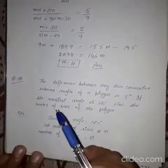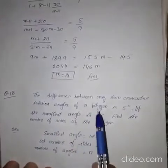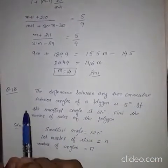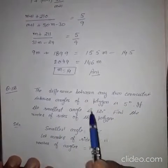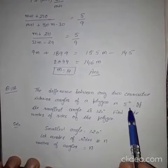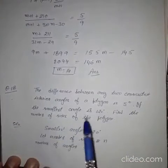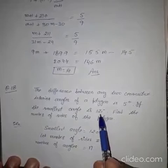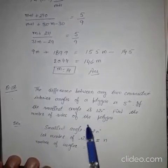Now question number 18. The difference between any two consecutive interior angles of a polygon is 5 degree. If the smallest angle is 120 degree, find the number of sides of the polygon.